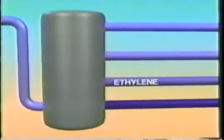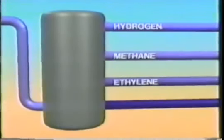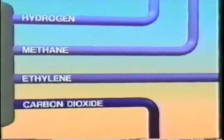The products enter the low-temperature fractionator and are separated into ethylene, hydrogen, methane, and carbon dioxide. The ethylene is further purified by scrubbing and drying until the product is 99.9% pure.